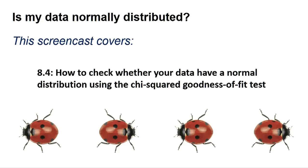If your data is normally distributed, then you can use a set of tests called parametric tests that are more powerful in discriminating significant from non-significant results. This is because the equation expects your data to conform to a pattern called the Gaussian or normal distribution, and so can make more accurate predictions.